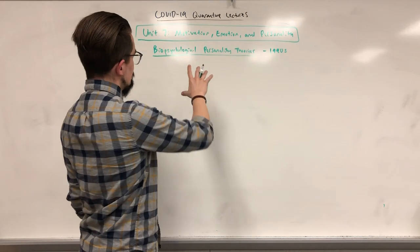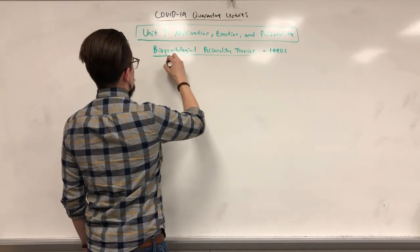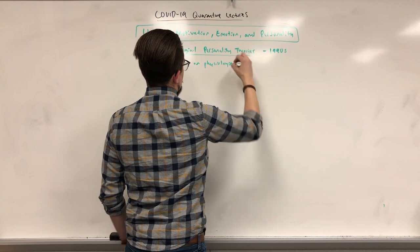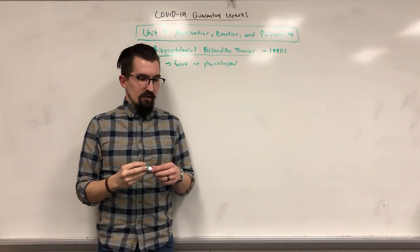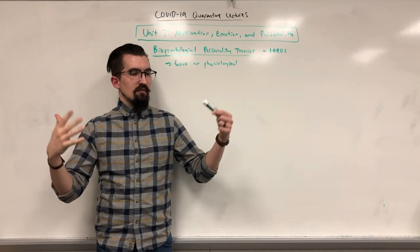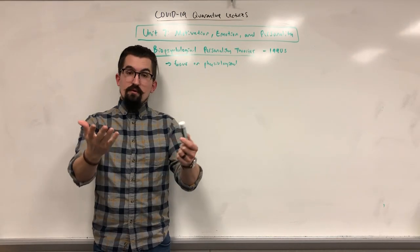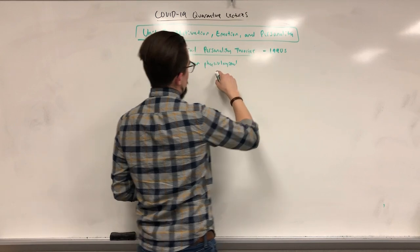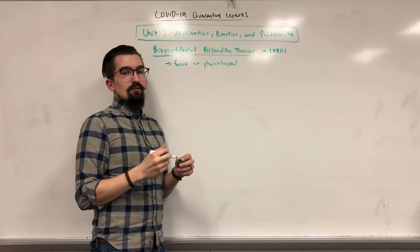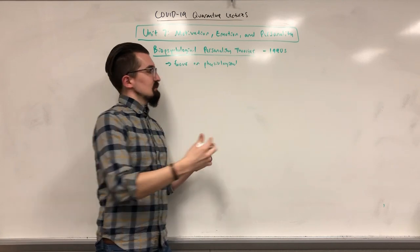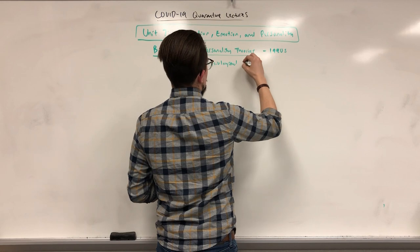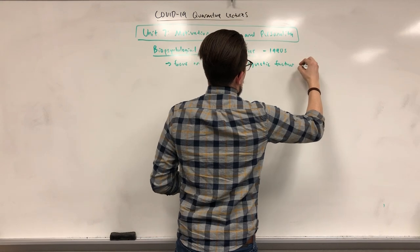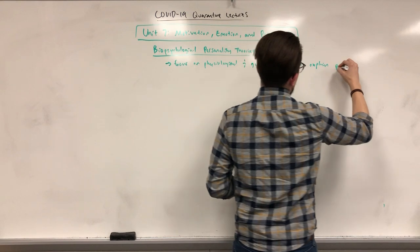These biopsychological theories focus on physiology — the processes of your body regarding how you feel and act, such as neurotransmitters and hormones — and how those are linked to genes. While not entirely determined by genes, they are largely contributed to by your inherited genetic makeup. These physiological and genetic factors are used to explain one's personality.